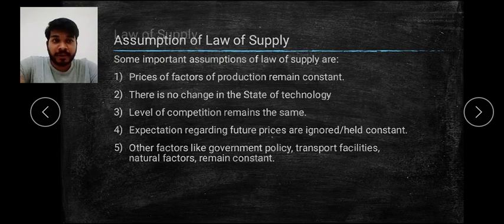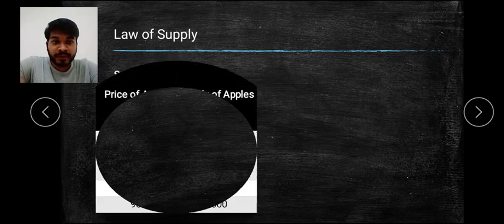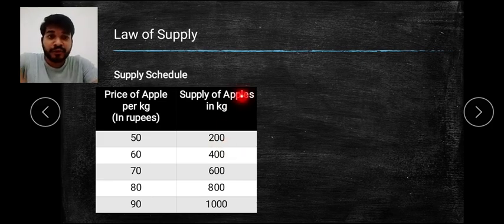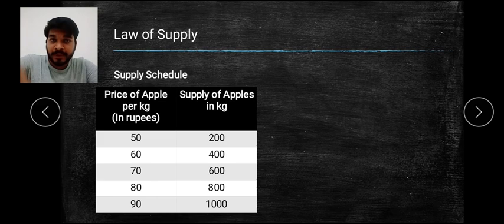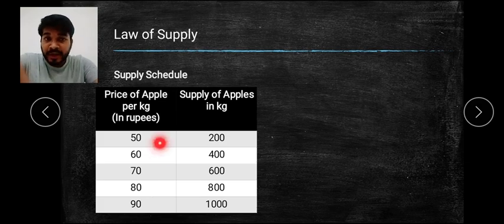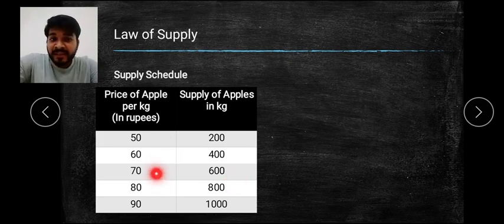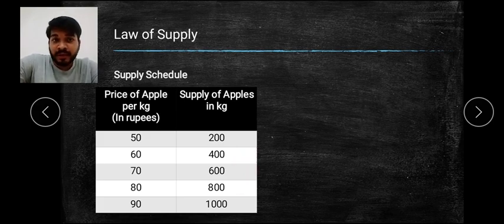For demonstrating the Law of Supply, we have taken a supply schedule — the table you can observe here. There are two columns: price of an apple per kg in rupees, and supply of apples in kg. At rupees 50, 200 kg of apples are supplied. When the price increases from 50 to 60, supply increases from 200 to 400. Again, when price increases from 60 to 70, supply increases from 400 to 600. As and when the price is increasing, the supply of apples is also increasing — the Law of Supply is working here.